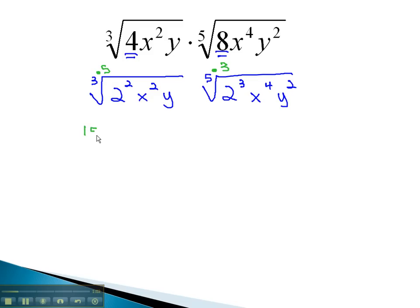So they both now have an index of 15 over the entire thing. As usual, we will also multiply the exponents in each radical by the same thing the index was multiplied by. On the 2, we have 5 times 2, or 10. x to the 5 times 2, or 10. y to the 5th.